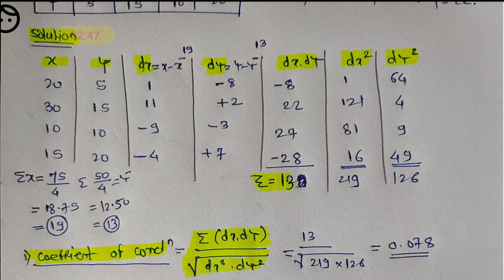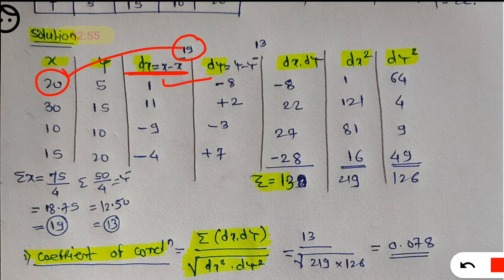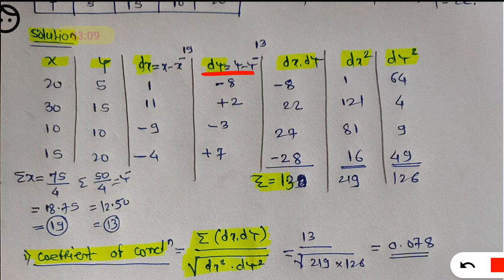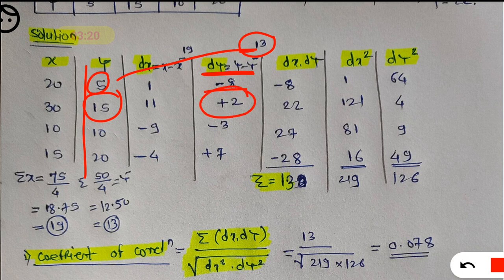Now we have to find dx. dx is nothing but x minus x̄. So 20 minus 19 is 1, 30 minus 19 is 11, 10 minus 19 is minus 9, 15 minus 19 is minus 4. Similarly, dy is y minus ȳ. So 5 minus 13 is minus 8, 15 minus 13 is 2, 10 minus 13 is minus 3, 20 minus 13 is 7. These are the values for dy.